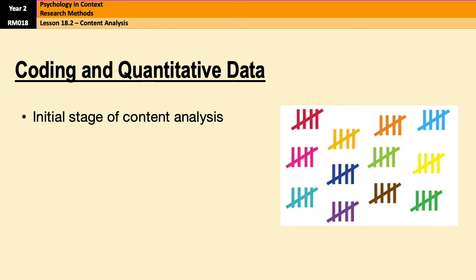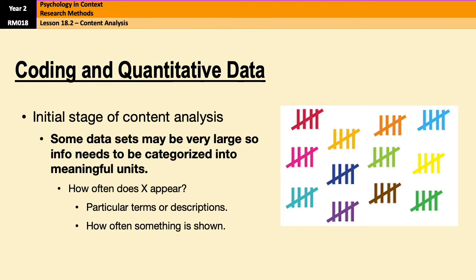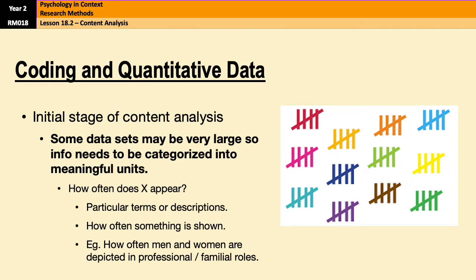The initial stage of content analysis is called coding. Some data sets to be analyzed may be very large, such as transcripts from interviews with offenders, so there's a need to categorize this information into meaningful units. That might involve simply counting up the number of times a particular word or phrase appears in the text, which helps produce a form of quantitative data. For example, if you are looking at how mental health is depicted in the newspaper, you might count up the number of times a derogatory word is used for somebody with mental health problems, or the number of times the NHS gets mentioned together with mental health or waiting times.